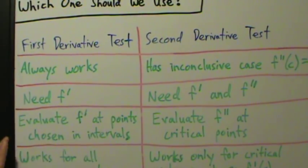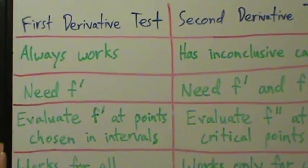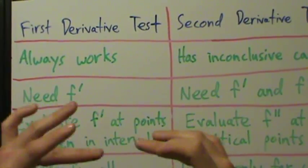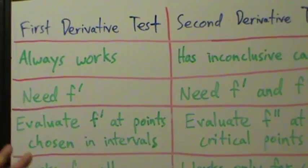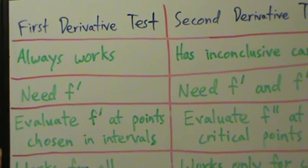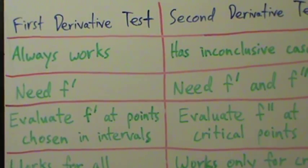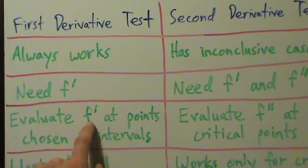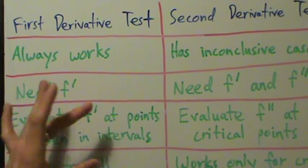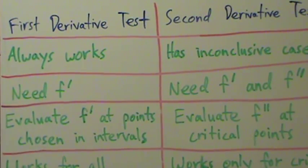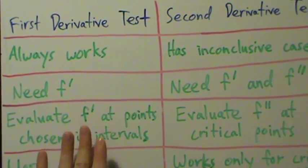Another comparison: for the first derivative test, we have to evaluate the first derivative at points we choose in those intervals. If you remember back to those examples, we set up a sign chart and divided the real line into intervals. We had to choose a point in each interval and evaluate the derivative at those points. Sometimes that could be a messy calculation — if your intervals aren't too nice, it's hard to pick a decent point. But you don't really have to simplify the answers; you just need to know whether f prime is positive or negative.